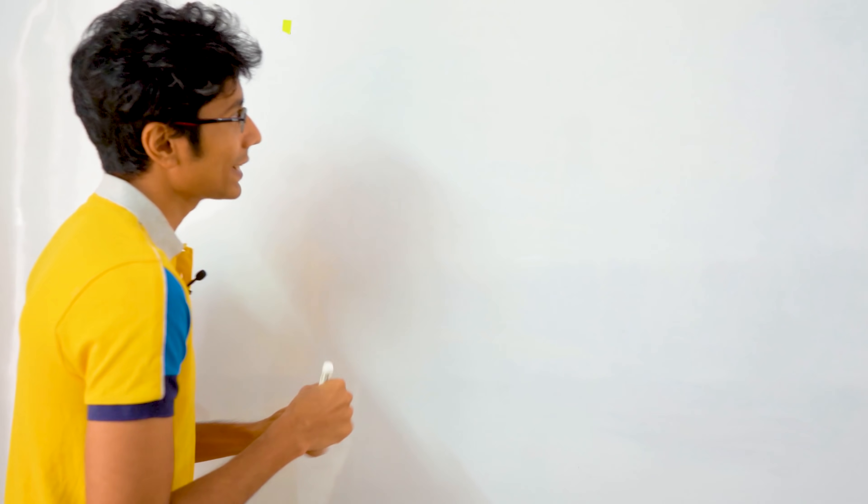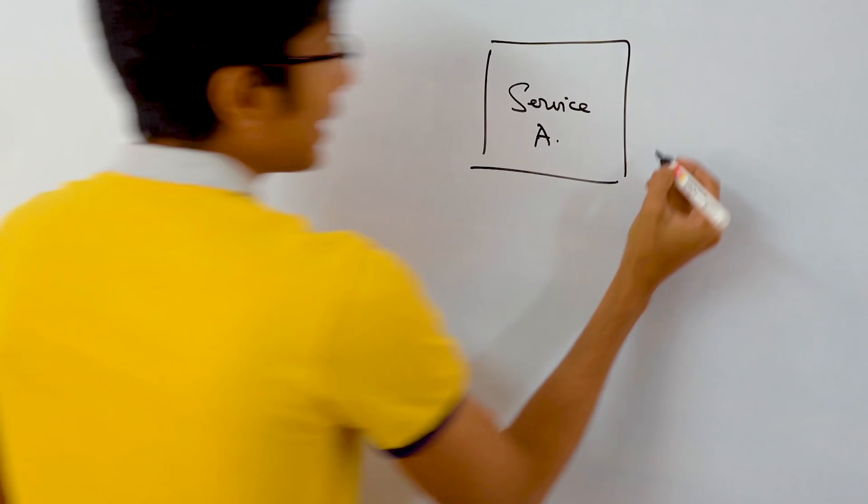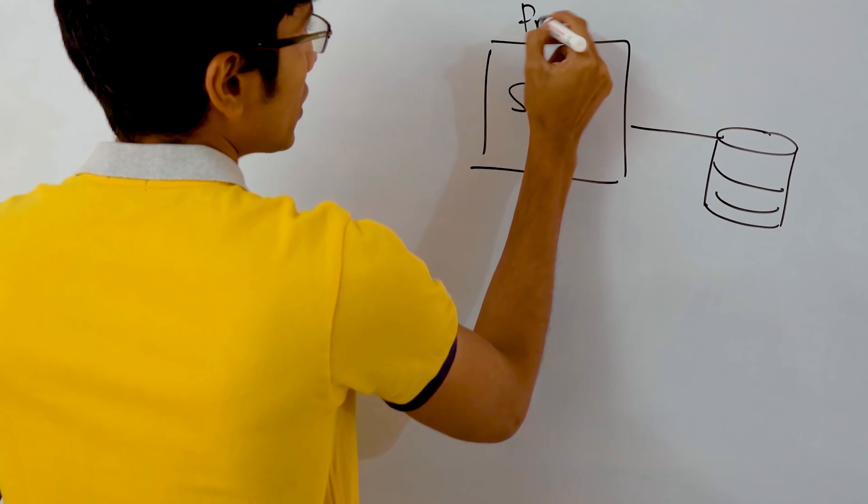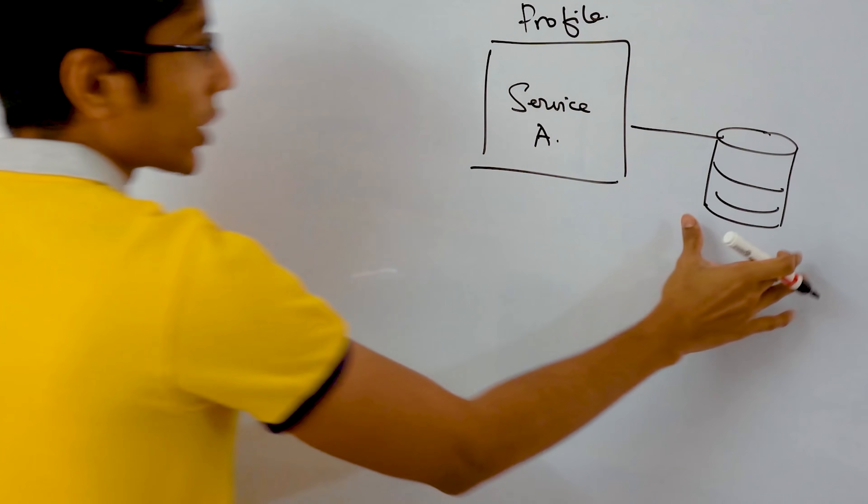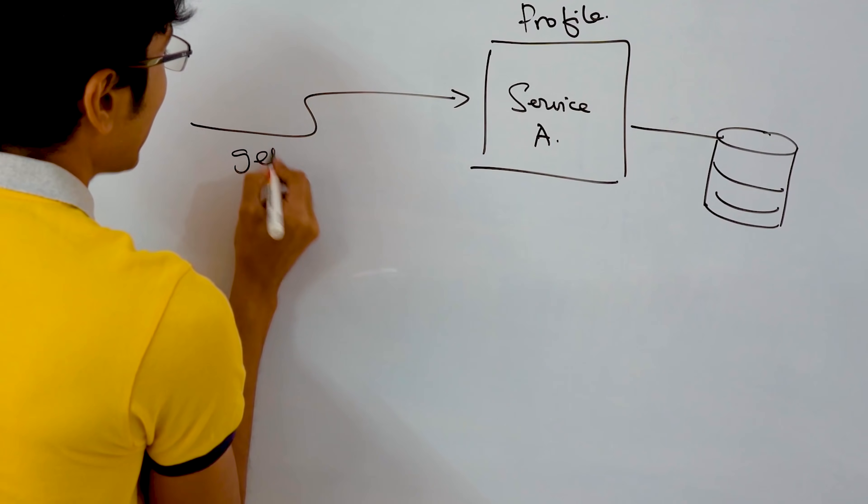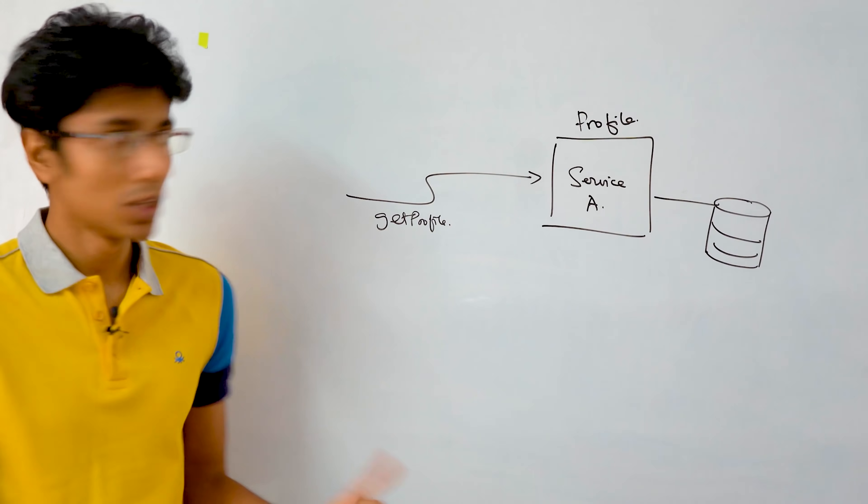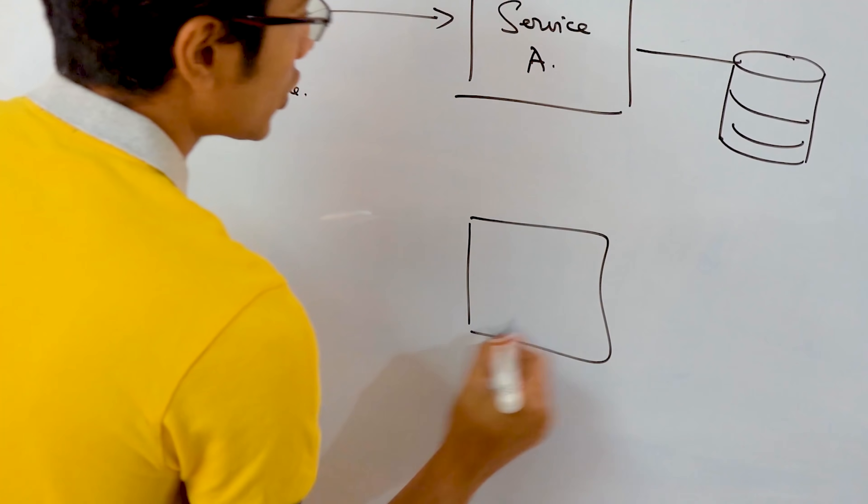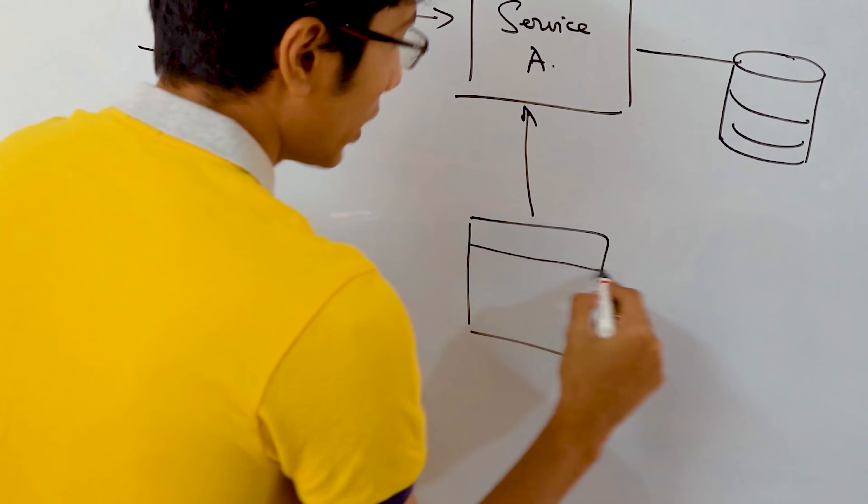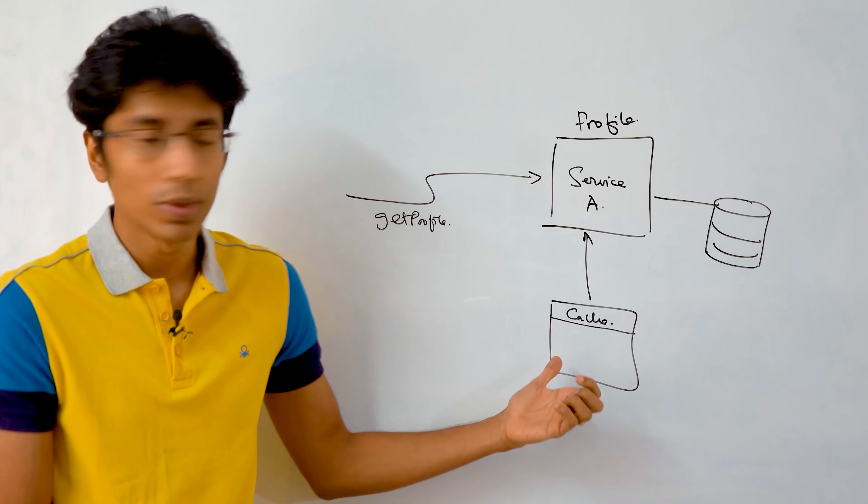The first one is that every microservice needs to encapsulate the data that it is responsible for. So if you have profiles as your microservice, all profile related information should be with you. So if a person says get a profile, it's not like they can get the profile from the payment service. Also, that's impossible. The payment service has to ask you for profile related information.